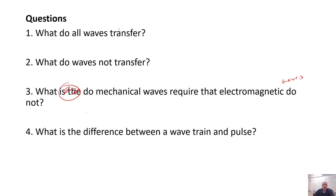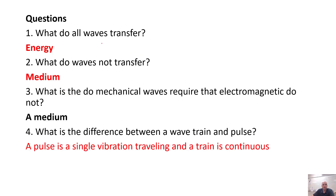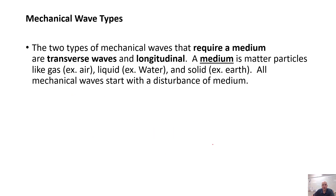Here are the answers. Waves transfer energy. They don't transfer the medium. What do mechanical waves require that electromagnetic waves do not? A medium. Electromagnetic waves can travel through space, which mechanical waves won't because they do need those particles. The difference between a wave train and a wave pulse: a pulse is a single vibration, and a wave train is continuous.